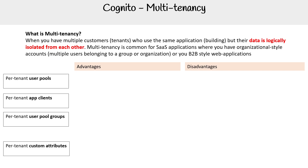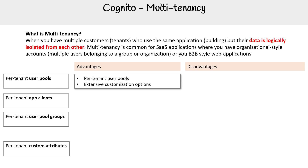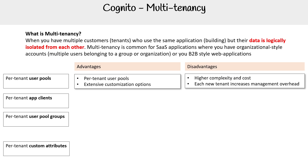The types are: per-tenant user pools, per-tenant app clients, user pool groups, and custom attributes. The advantage of per-tenant user pools is extensive customization options. The disadvantage is high complexity and cost — each new tenant increases management overhead.